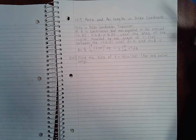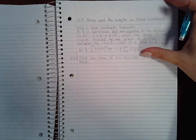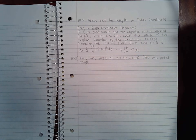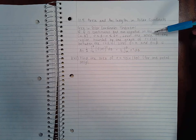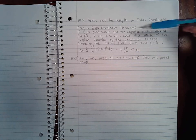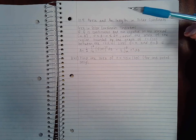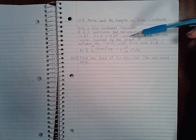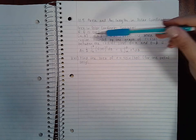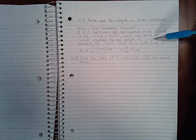This is section 10.5 which is area and arc length in polar coordinates. The area in polar coordinates theorem says if f is continuous and non-negative on the interval [a, b] where the difference between these two values is between 0 and 2π, then the area of the region bounded by the graph r equals f(θ)